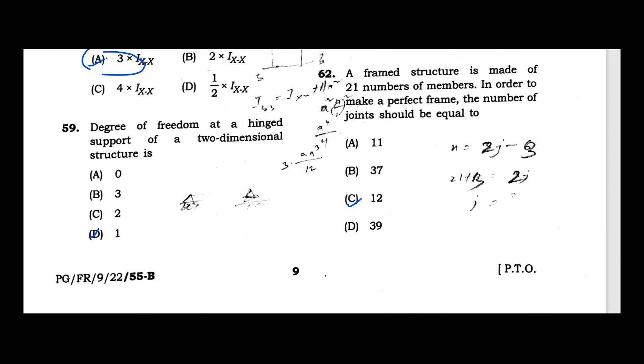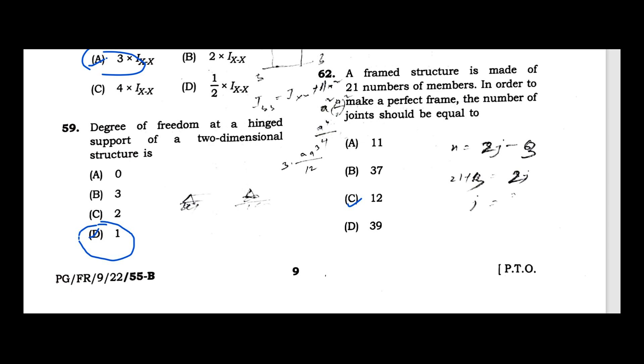Question 59: Degree of freedom at the hinge support of a two dimensional structure. For a two dimensional structure, the hinge support has degree of freedom of one. Because it is a two dimensional structure, it can only be moved in one way. This is the degree of freedom - one.